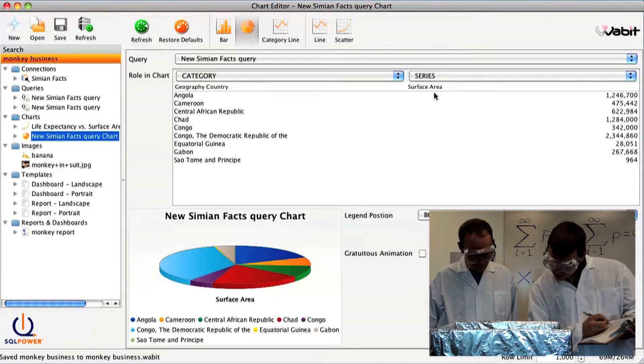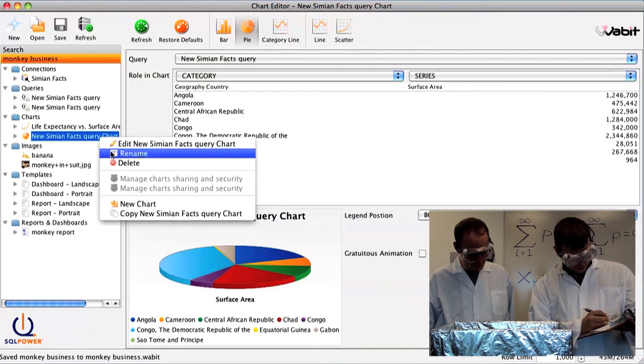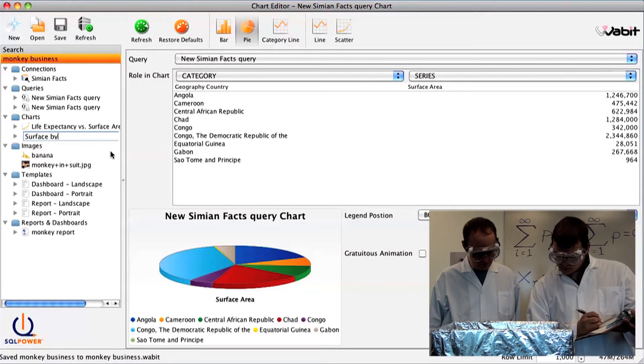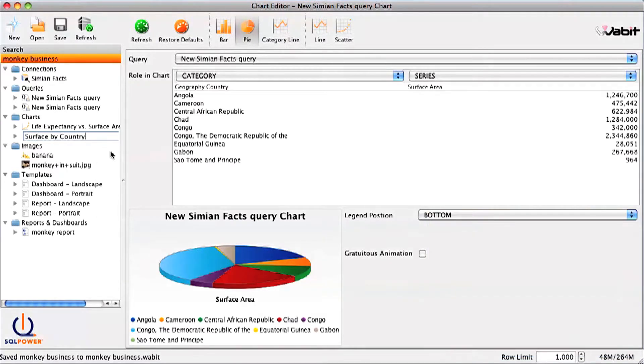Yep. Yep. Okay. They've produced a pie chart plotting the relative surface areas in Central African countries. Oh, our monkeys are doing pretty well right now. Maybe a result that we could publish.